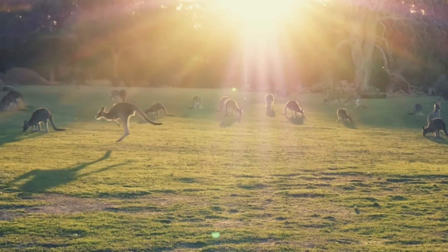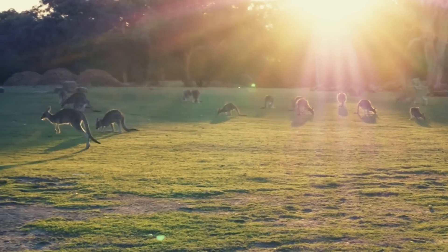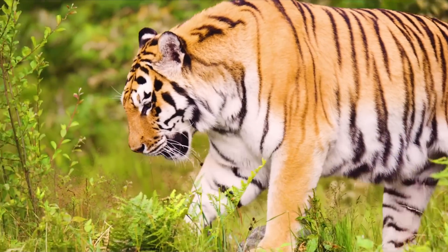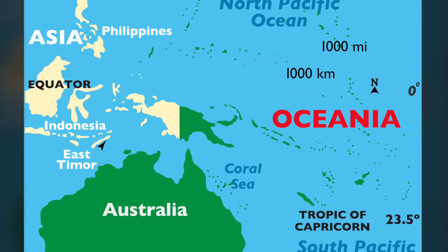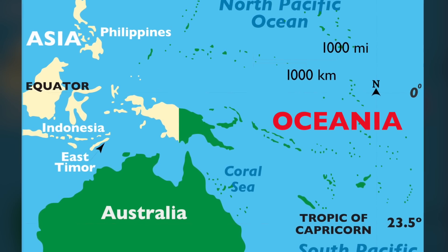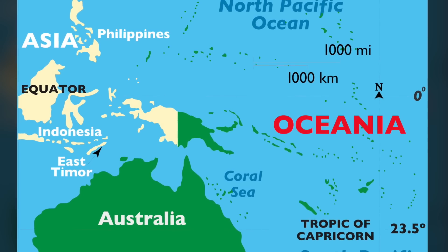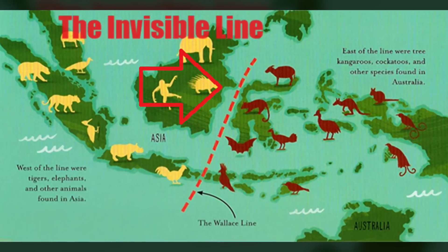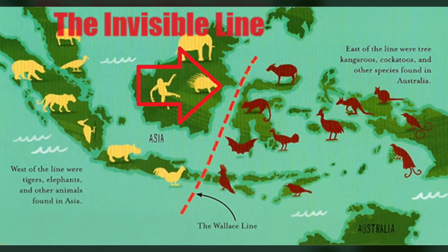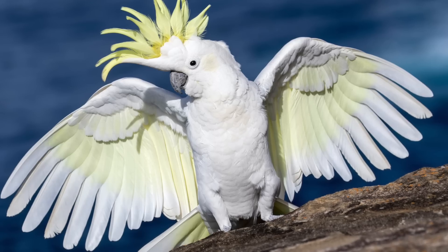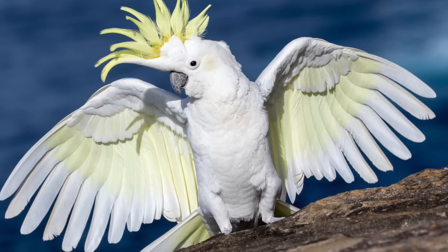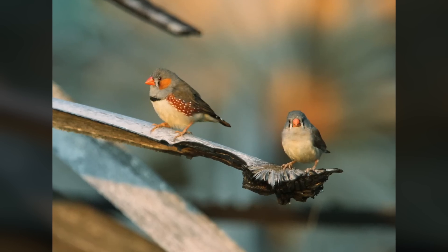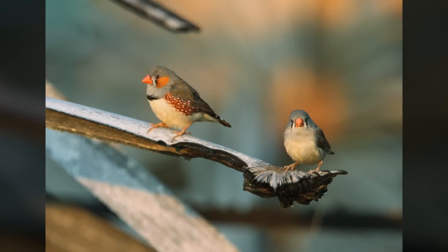On one side of the line roamed the bouncing kangaroo; on the other, man-eating tigers. To the south is Australia, to the north are the Philippines and India. Remarkably, the line includes both plant and animal species. Sulfur-crested cockatoos are on one side of the Wallace Line, and Indonesian finches live just across the sea channel.